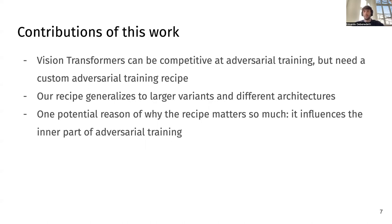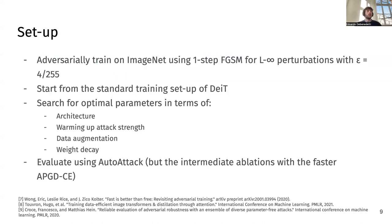Moreover, we test this recipe on larger model variants and even on other architectures and another threat model. Finally, we also investigate one potential reason why the recipe is so important, which has to do with how adversarial training works. Starting from the first point: since the canonical recipe leaves visual transformers underperforming, we conduct a variable ablation using several training parameters to train adversarially robust models on ImageNet using one step of the FGSM attack.